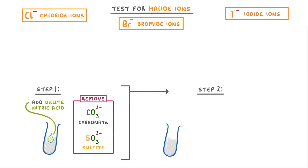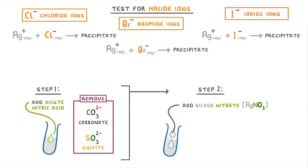And for the second stage, instead of adding barium chloride, we have to add silver nitrate. The key idea this time is that the silver ions from the silver nitrate can react with the halide ions to form a precipitate. And importantly, the color of the precipitate depends on the particular halide that the silver ions react with.